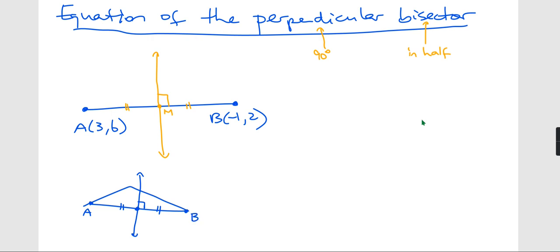Line segment ends on both ends. That's different from a line. The perpendicular bisector is a line that goes on forever on both sides.